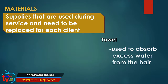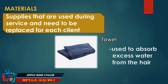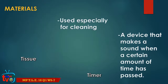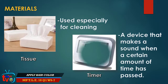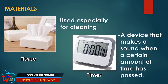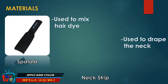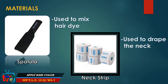Materials are supplies that are used during service and need to be replaced for each client. A towel is used to absorb excess water from the hair. Tissue is used especially for cleaning. A timer is a device that makes a sound when a certain amount of time has passed. A spatula is used to mix hair dye. A neck strip is used to drape the neck.